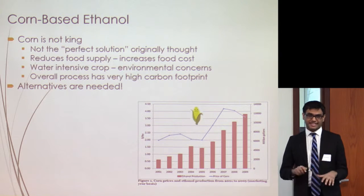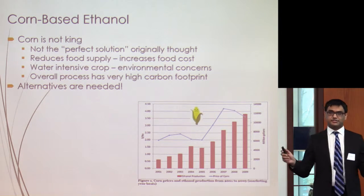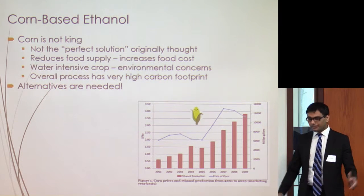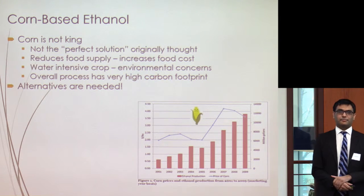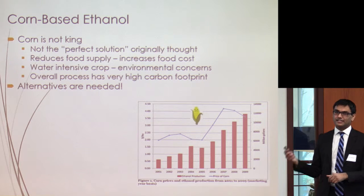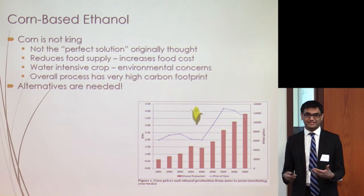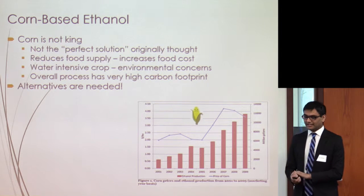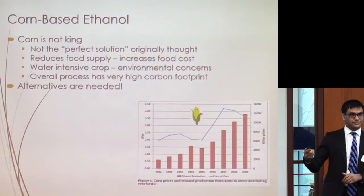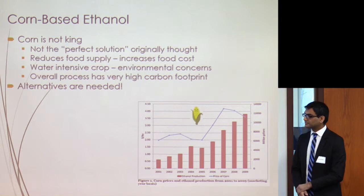Right now we do have bioethanol being produced from corn. When this was first presented, it was seen as the solution — we were going to make renewable, green energy with no problems. But that's not exactly what ended up happening. Because we are using corn, we end up taking it out of the food supply, which causes an increase in the price of corn, making it inaccessible for a lot of people worldwide. And as the world population increases, we'll need to grow more and more corn, creating a snowballing problem.